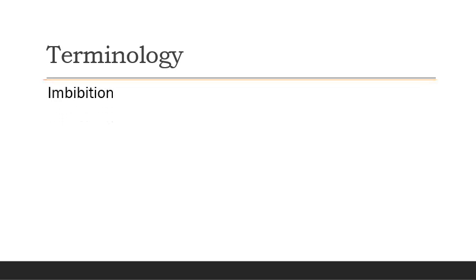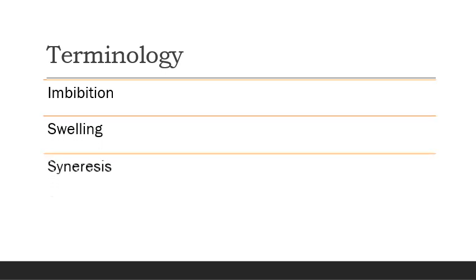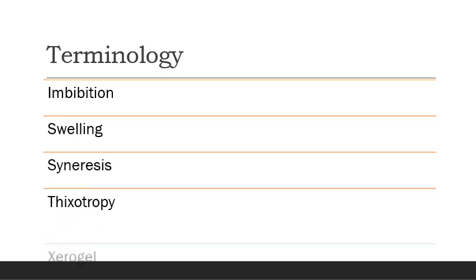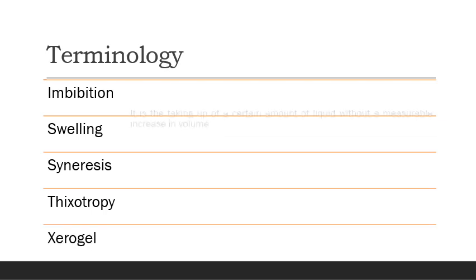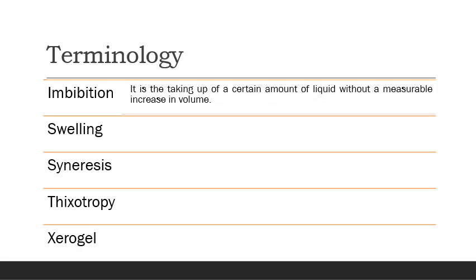We have some terminologies related to gels and magmas. These include imbibition, swelling, syneresis, thixotropy, and xerogel. Imbibition is the taking up of a certain amount of liquid without a measurable increase in volume. In some situations, gels may take up water from the environment, but after absorbing that moisture, there is no increase in the volume of the preparation — this is called imbibition.